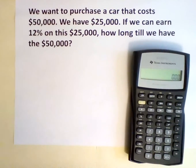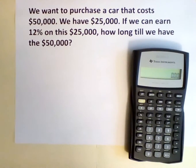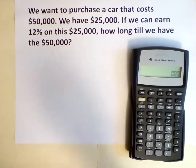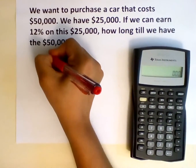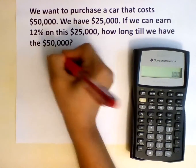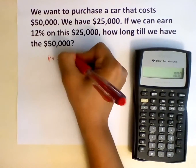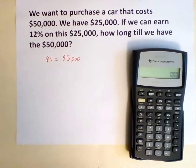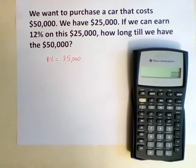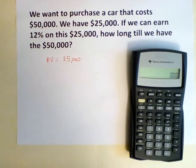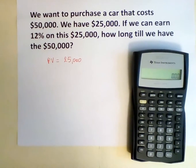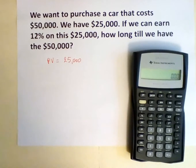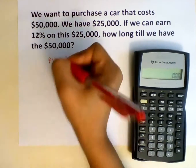$25,000 is how much we have today, so our present value would be $25,000. Because we know that this is a cash outflow as we are investing this $25,000, we will input it in the financial calculator as a negative number.